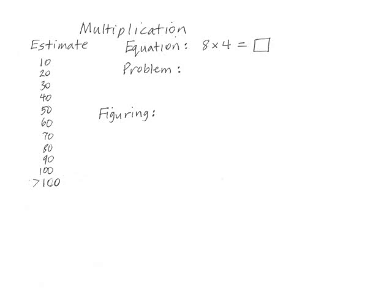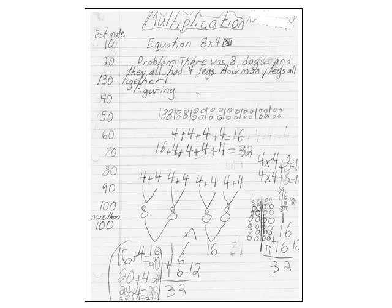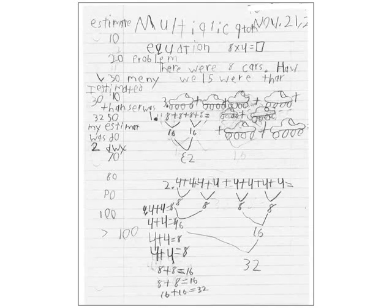Then the students got to work, and what happened is what typically happens. There's always confusion with things that are new. I circulated, observing and helping. Some students need more help than others. Here are some of the results. It's always interesting to me to look at student work. I think that the best use of paper and pencil for students is to keep track of their thinking.